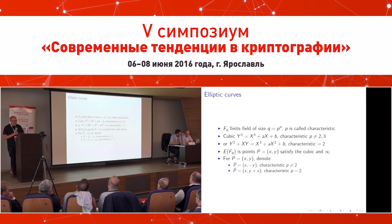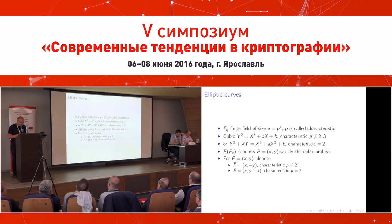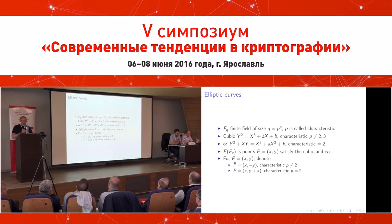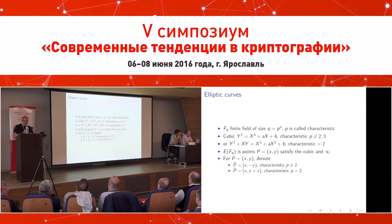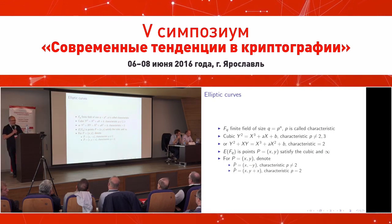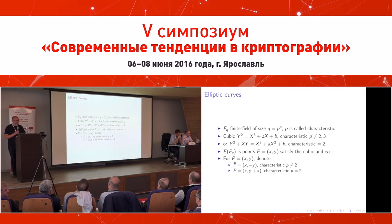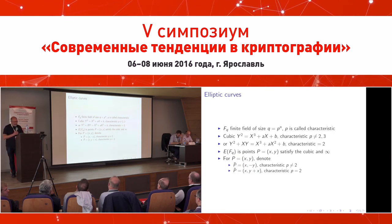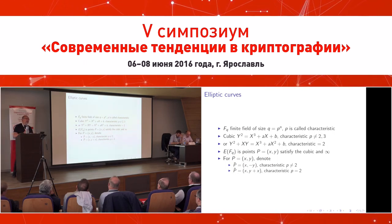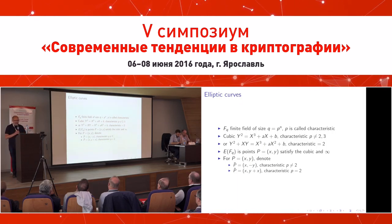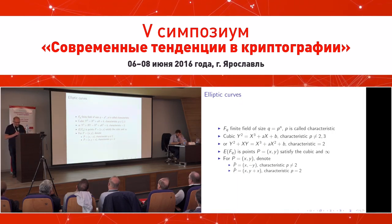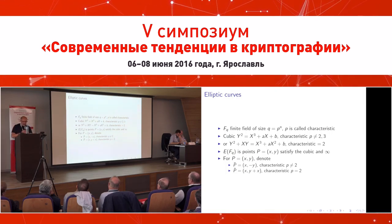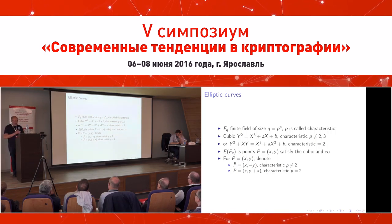In the case of characteristic 2, the equation is slightly different: y² + xy = x³ + ax² + b, where a and b are constants from the field of Q elements. An elliptic curve is the set of points satisfying this cubic equation as affine points, plus one point at infinity which serves as the neutral element for the group.